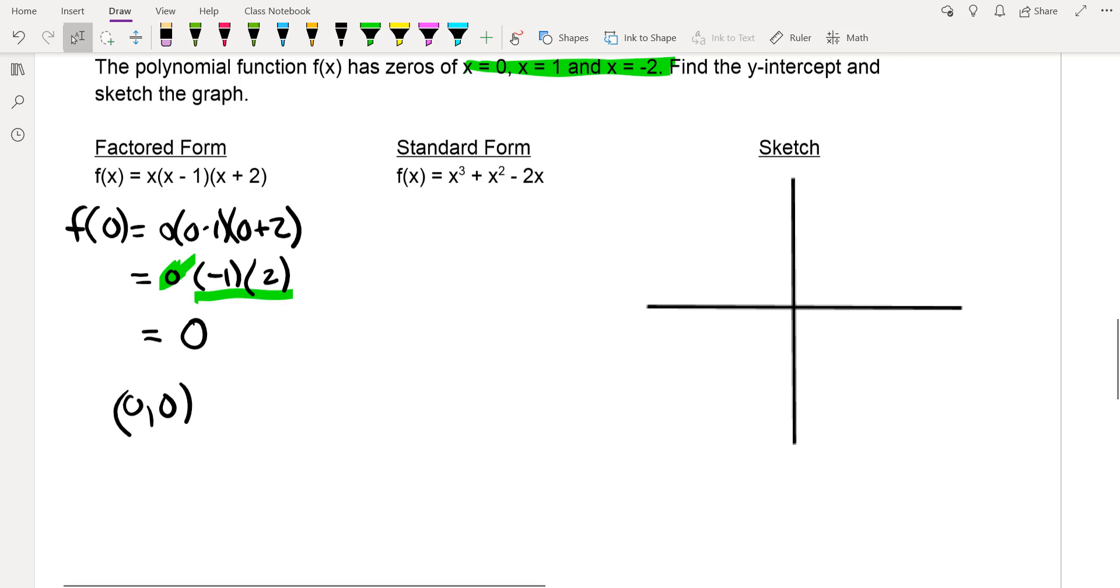And again, standard form, super easy to find the y-intercept in that, because all you're looking for is a constant. And a constant, remember, is going to be a term without the variable x. So let's see, the first term, that's x cubed, we've got x squared, we've got 2x. Well, we don't have a constant in this one. So what's up with that?